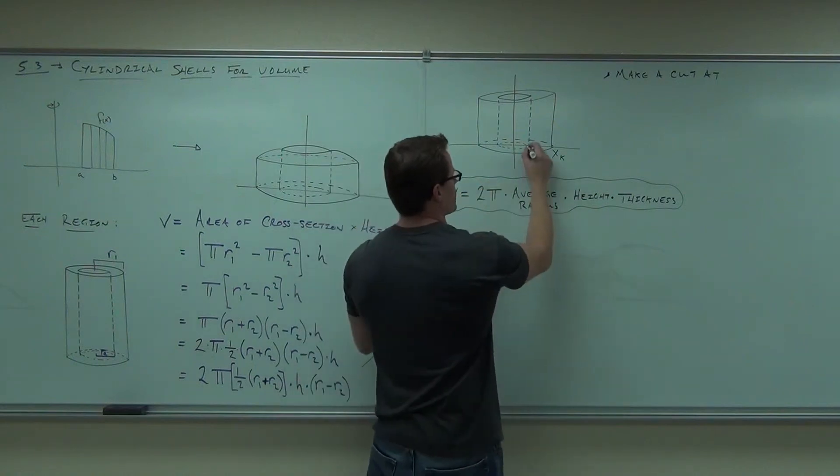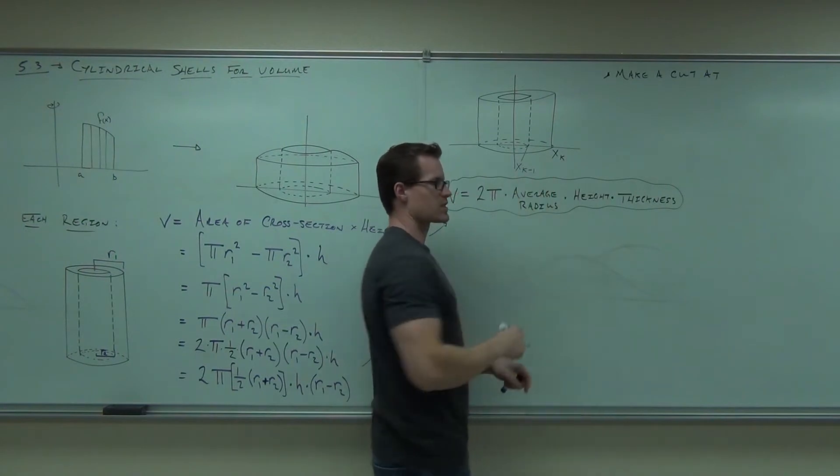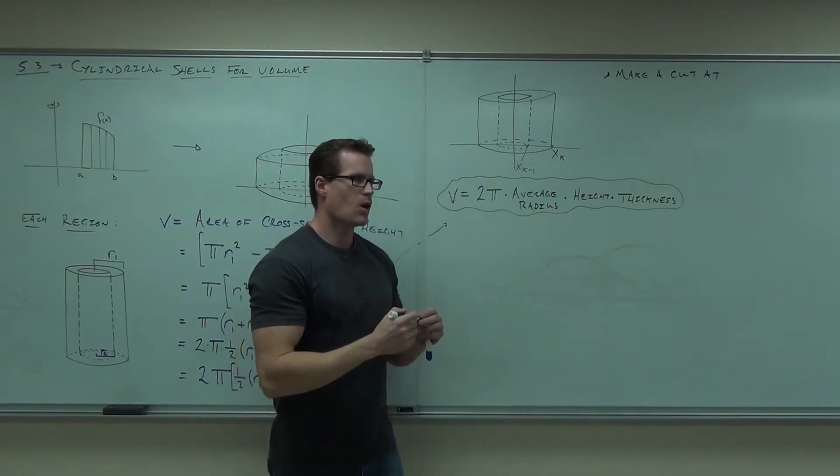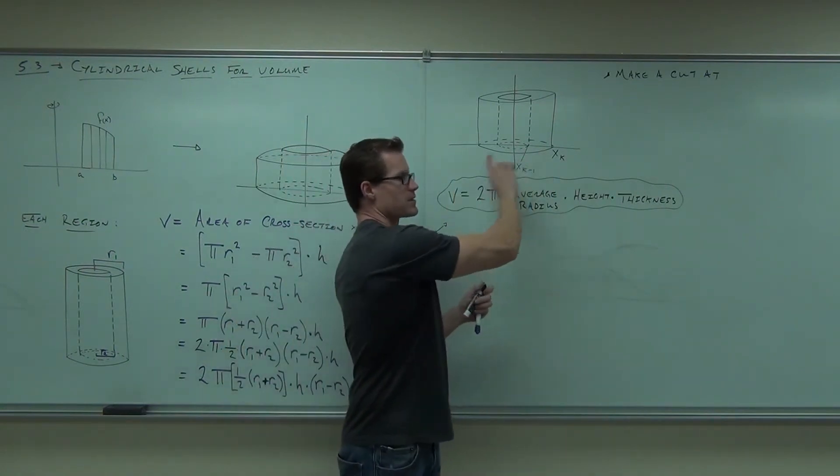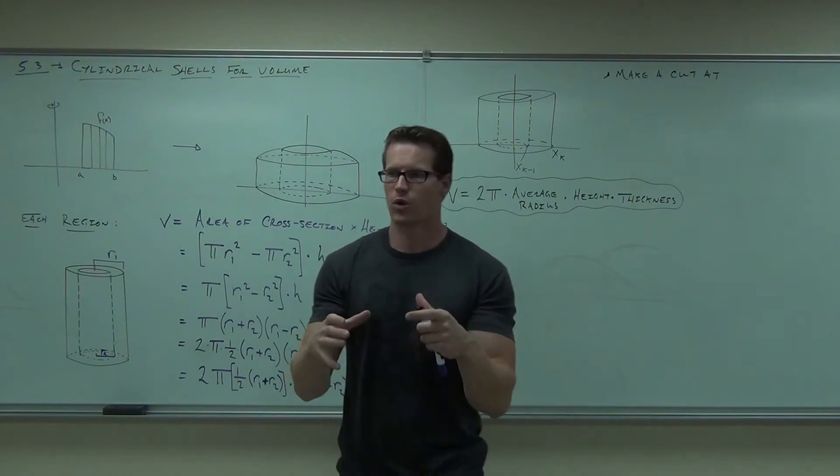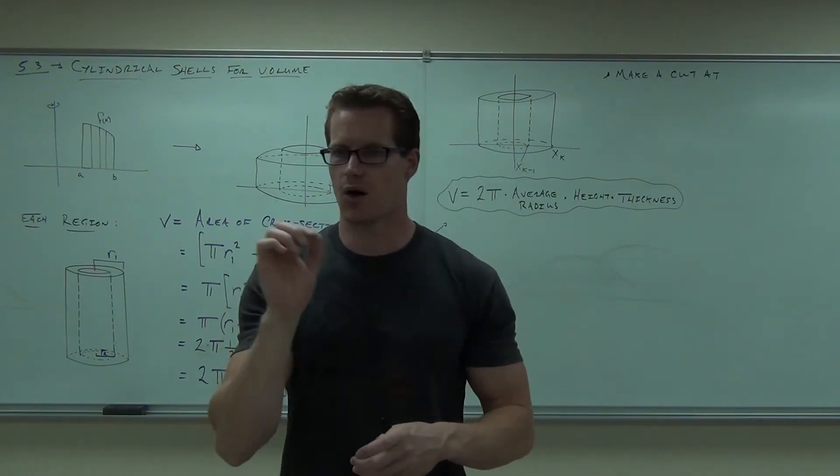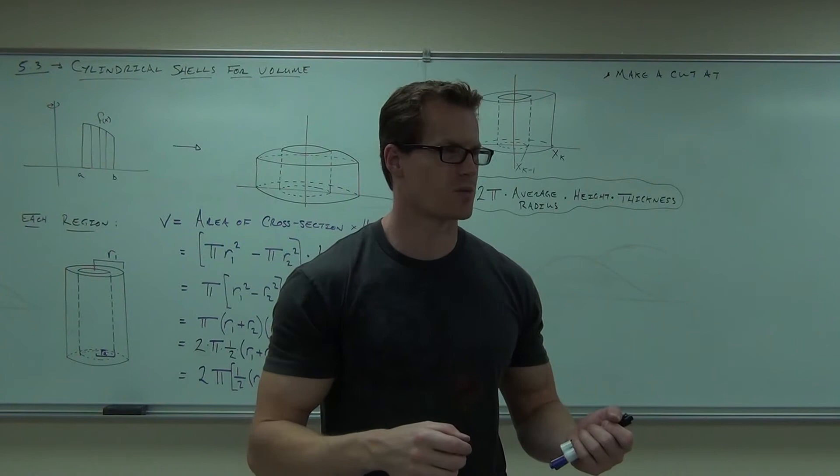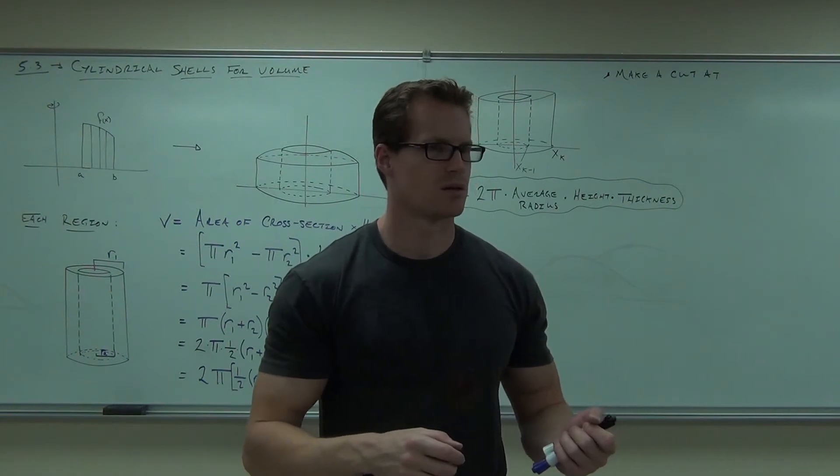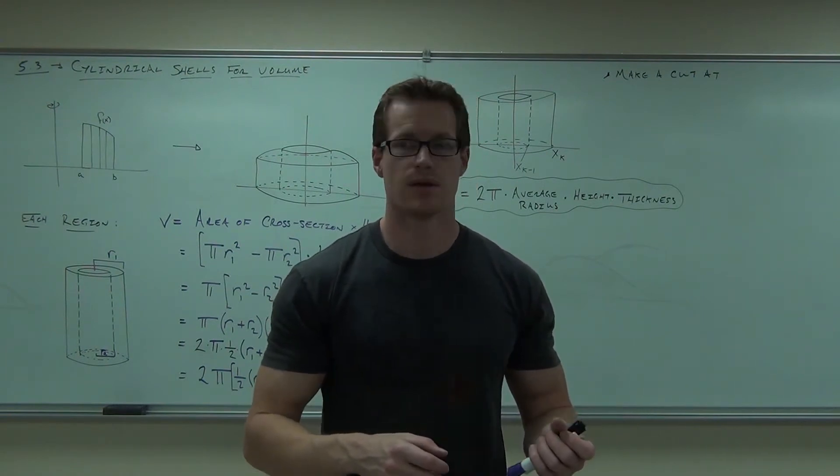This is x sub k. This one's got to be x sub k minus 1. It just stands for the previous cut. What we're going to do is, within this solid shell, we're going to make another cut. Arbitrary point. How do we call our arbitrary points? What do we have to label it? x_k dot.